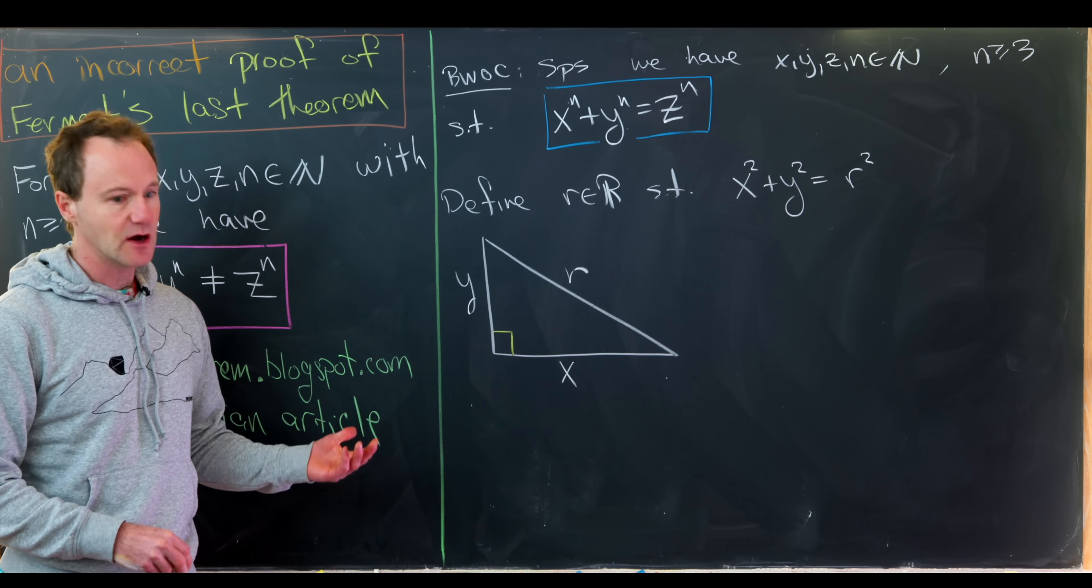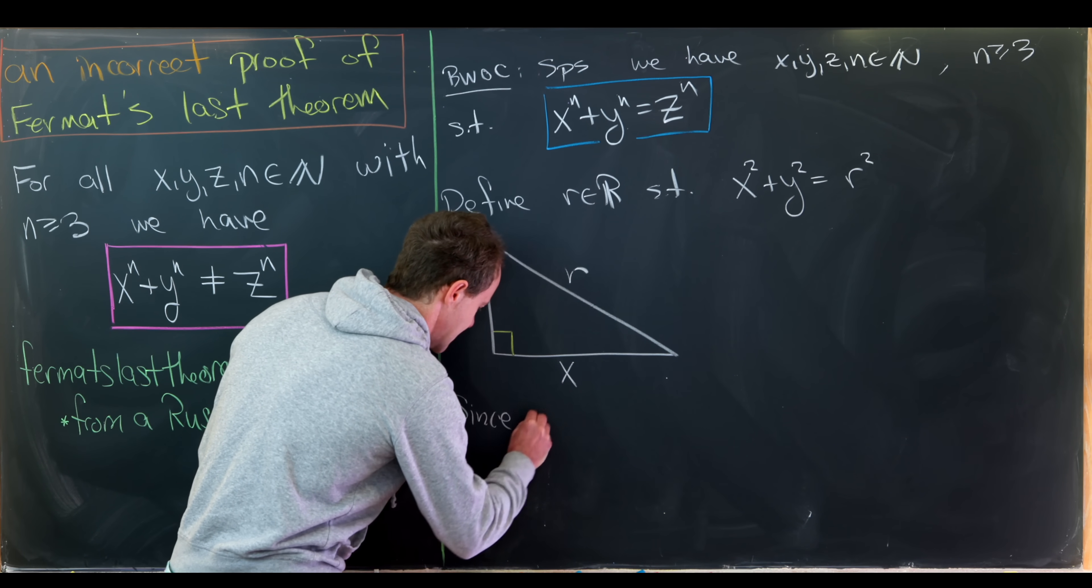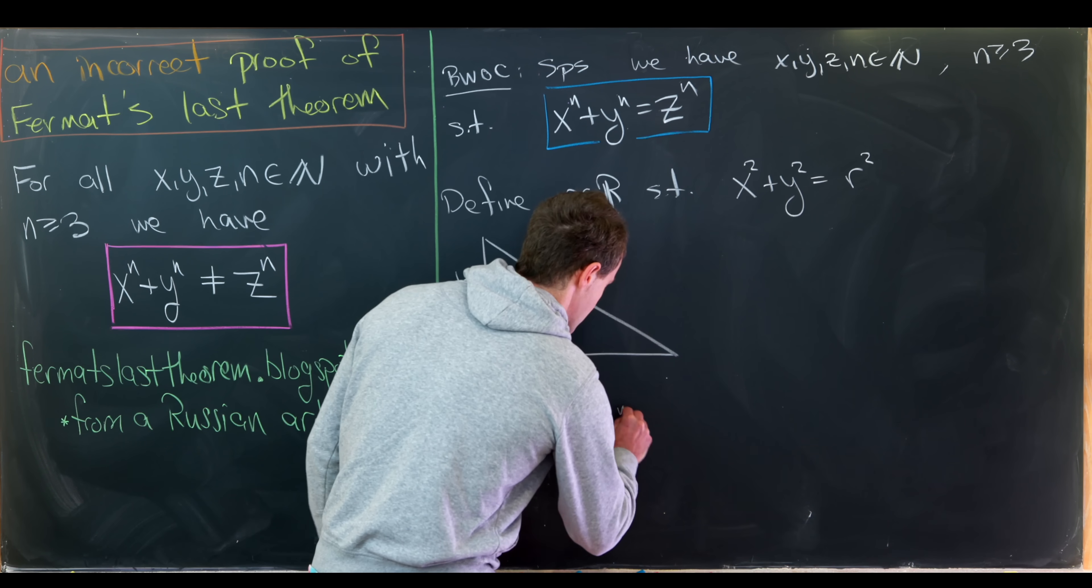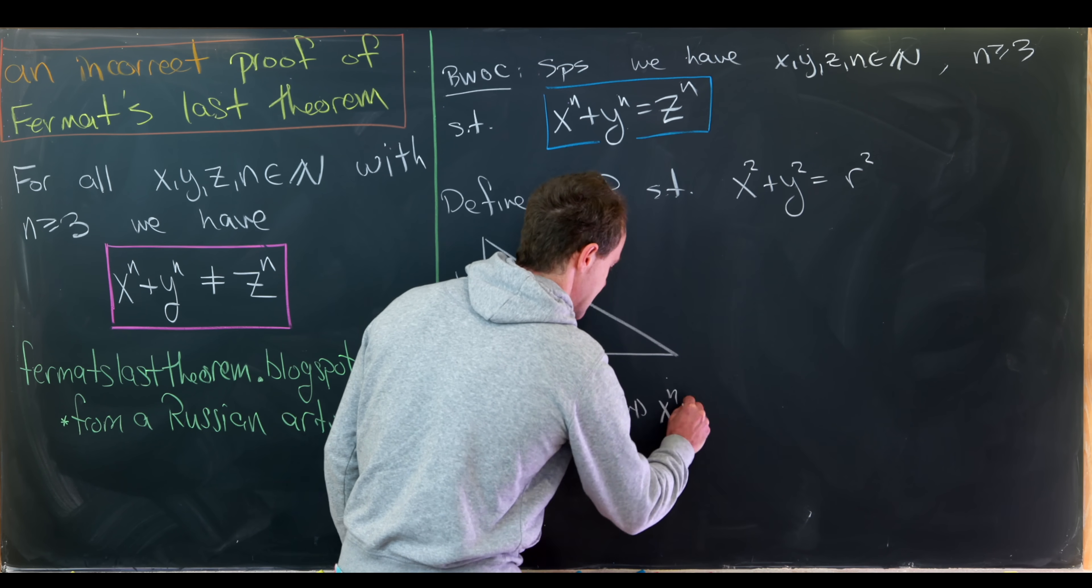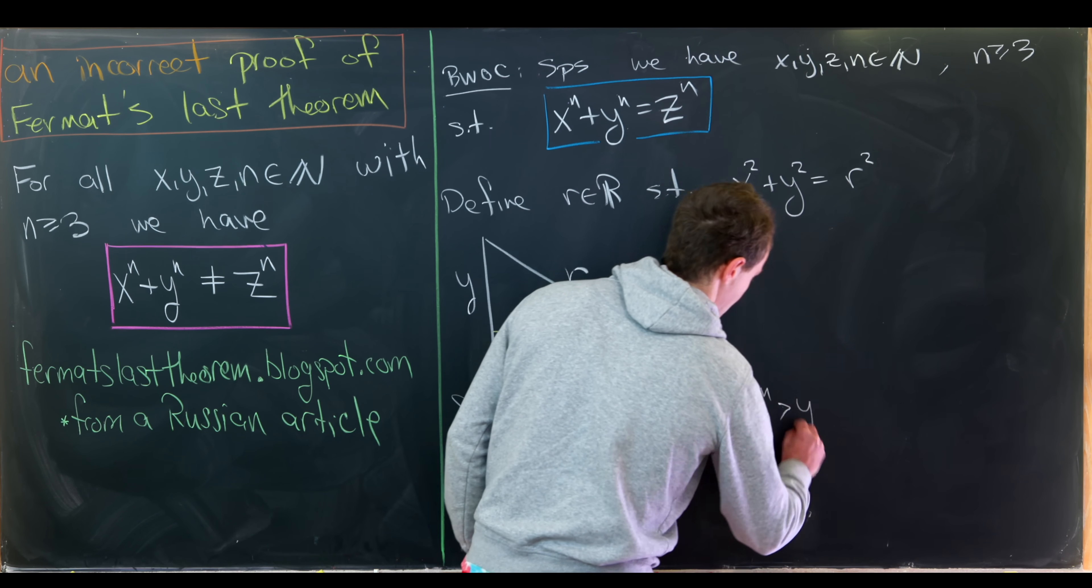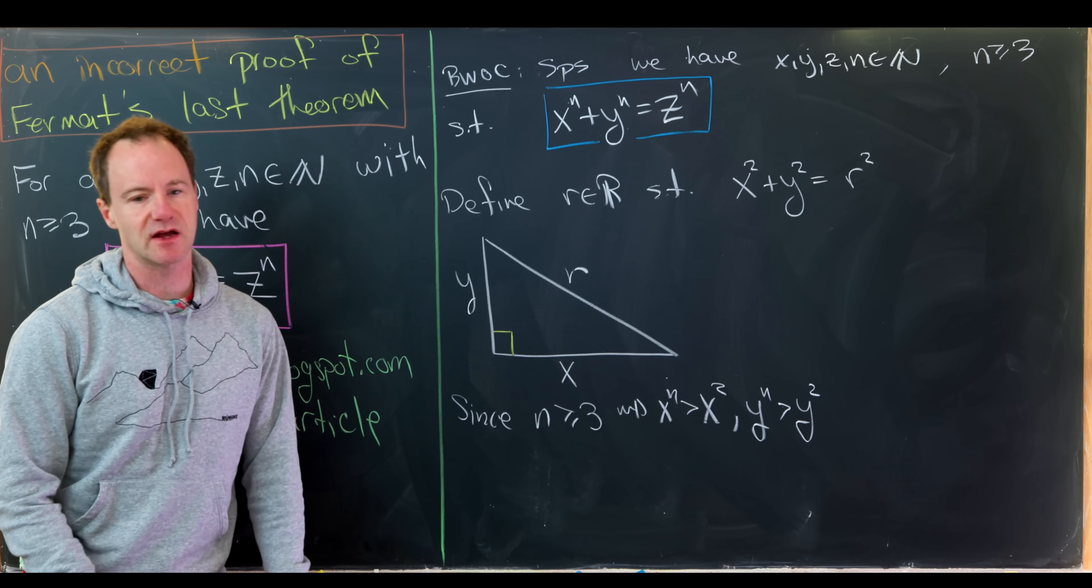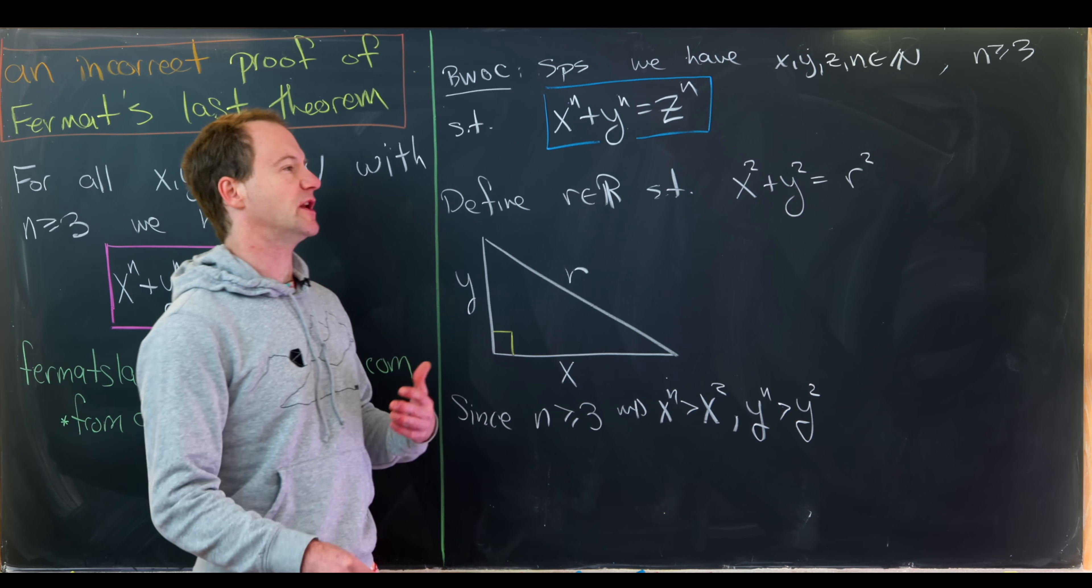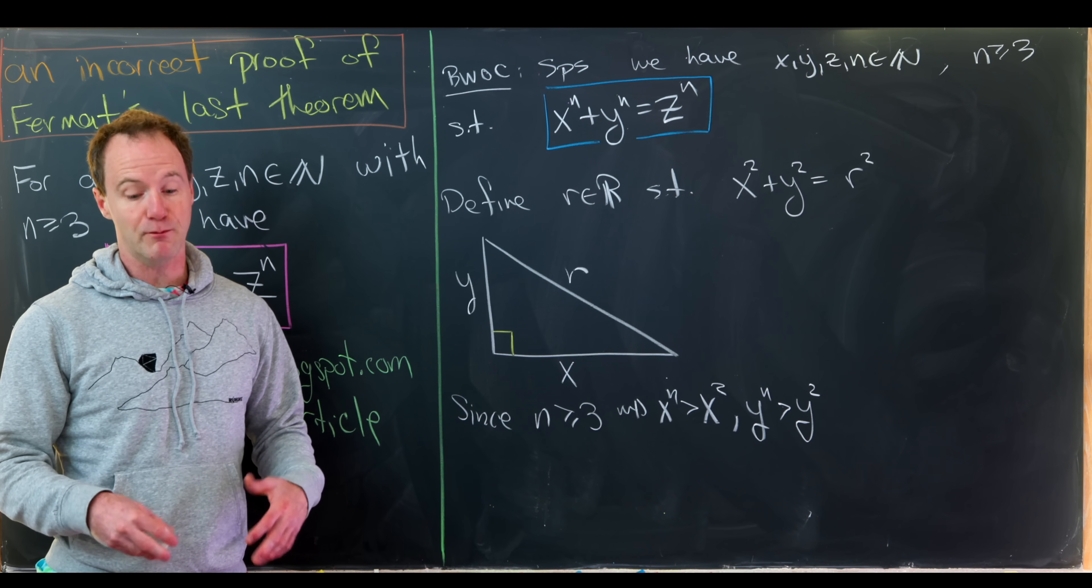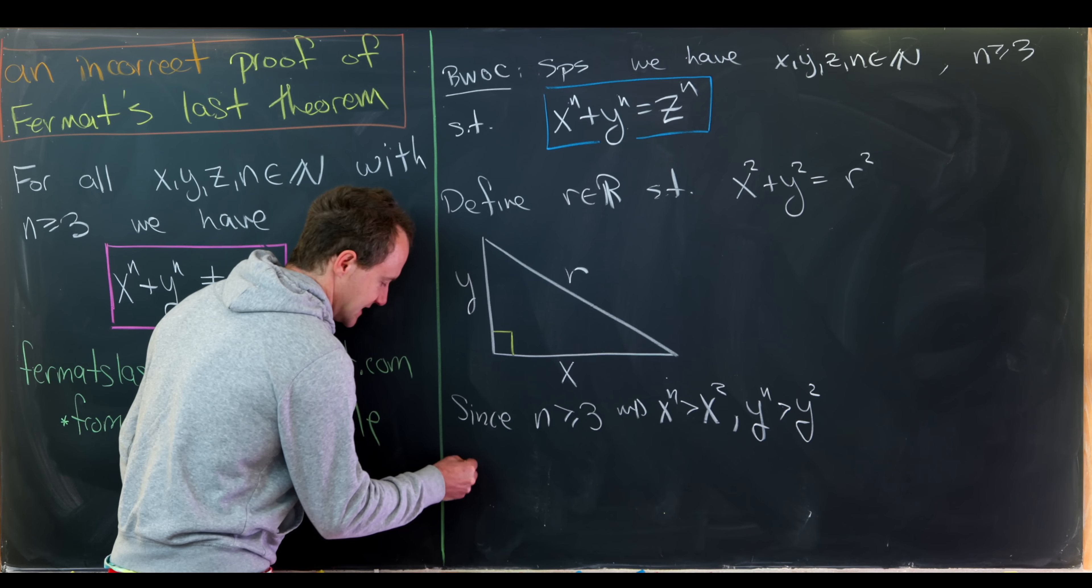So now from here we're going to do a little bit of an inequality. Since n is bigger than or equal to 3, we know that x to the n is bigger than x squared and y to the n is bigger than y squared. You might say, well, what about bigger than or equal to because x and y could both be equal to 1, but you can maybe pretty quickly check that x and y are not allowed to be equal to 1, or they're at least not both allowed to be equal to 1.